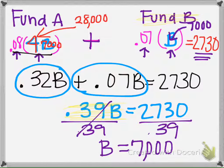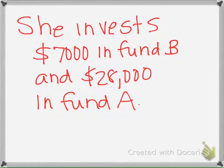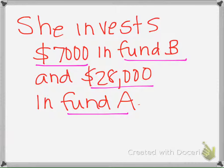So she will invest $7,000 in Fund B—that's what the question asked us. If it asked us about Fund A, we would say $28,000.